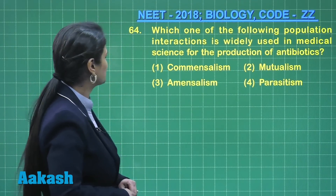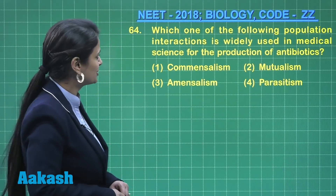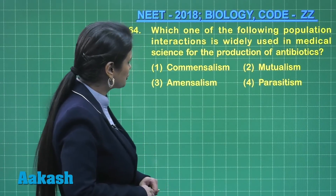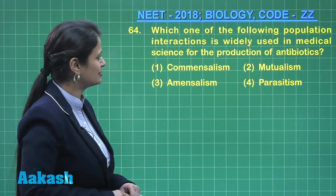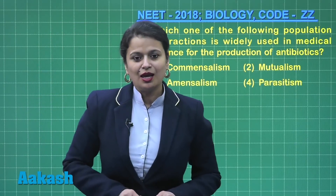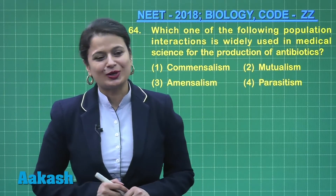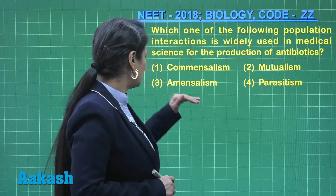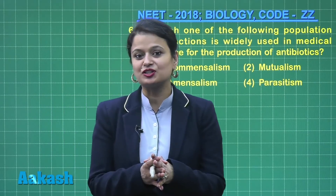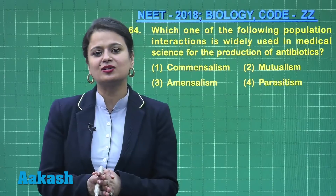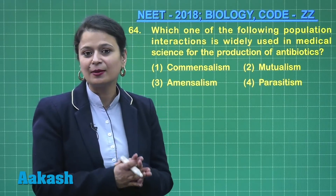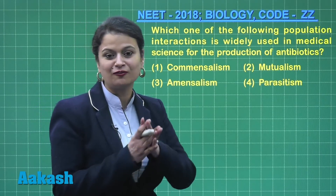Now let's move on to question number 64. Every year one question comes from interactions. Question 64 asks: which one of the following population interactions is widely used in medical science for the production of antibiotics? The answer is option number three — amensalism. Amensalism is a type of interaction in which chemicals secreted by an organism inhibit the growth of another organism in the nearby area.